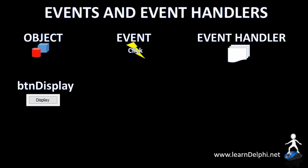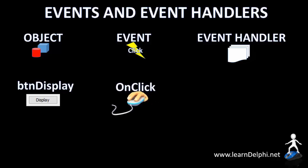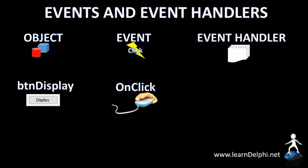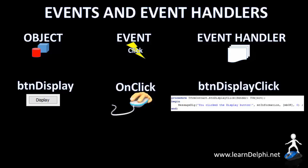Here, I'm using a button named btnDisplay as an example. Events in Delphi are prefixed with the word 'on', like onClick. The onClick event is an example of an event that can be performed by the button called btnDisplay. When the user invokes the onClick event by clicking the button, nothing will happen if we did not program the reaction in an event handler.